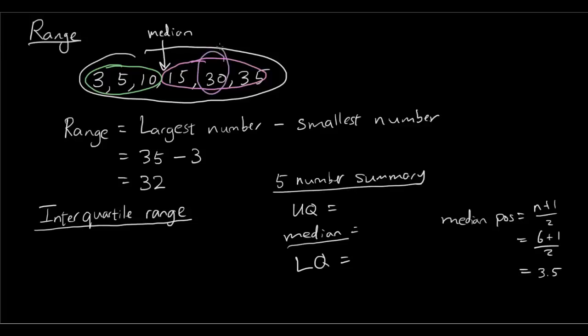The upper quartile is 30 because that's the median of the top half. And the lower quartile is 5 because that is the median of the bottom half. And of course, the median itself is between 10 and 15. So 10 plus 15 divided by 2, that's 25 divided by 2, which is 12.5. That's the median.